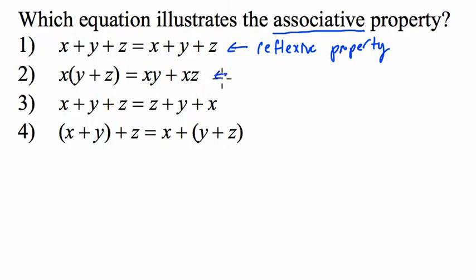Here, choice two, this is the distributive property. Why? Because x times y is xy, and x times z is xz. And we're adding the two. So it's the distributive property over addition. We're multiplying x by both y and z.